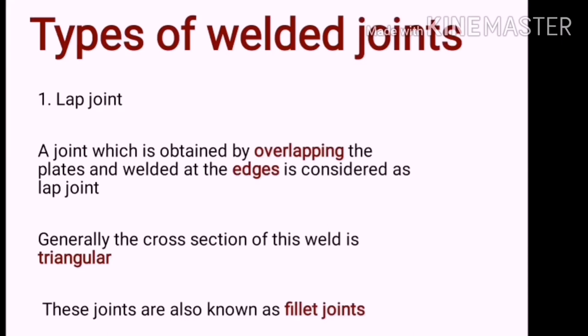Types of welded joint. The first type of welded joint which we are going to see is the lap joint. A lap joint is a joint which is obtained by overlapping the plates and welding it at the edges. Generally, the cross section of this weld is triangular. These joints are also known as fillet joints.